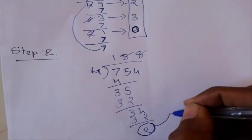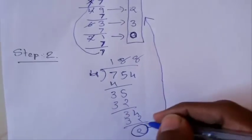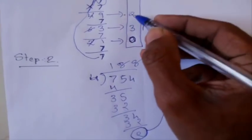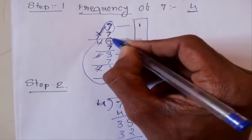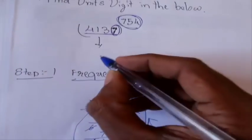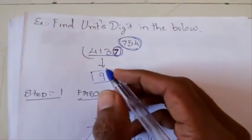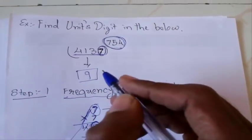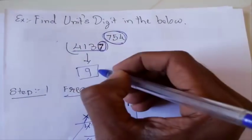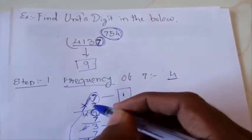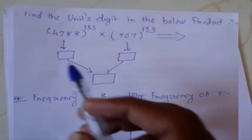Now note down this remainder and compare it with our frequency series. At rank 2 we have 9 as the answer. So our final answer is 9 — the units digit in the answer of this exponential form will be 9.